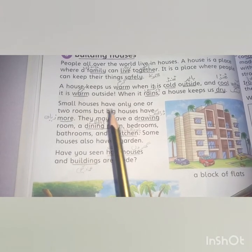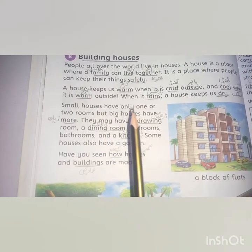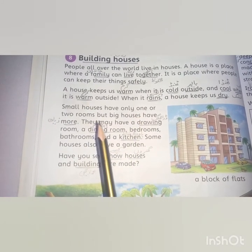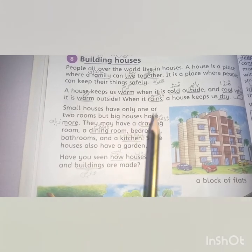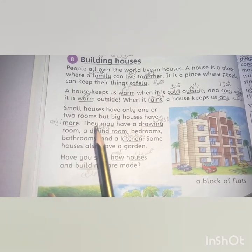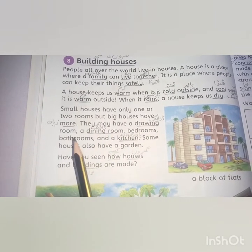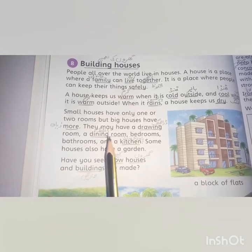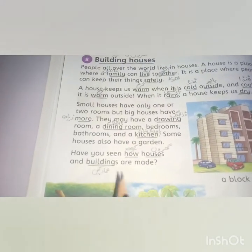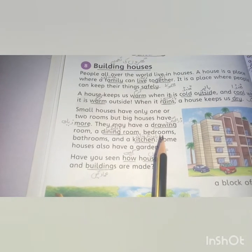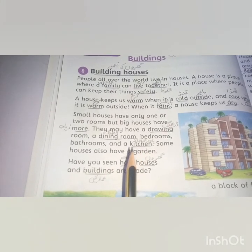Small houses have only one or two rooms, but big houses have more rooms. They may have a dining room, bedrooms, bathrooms, and a kitchen.